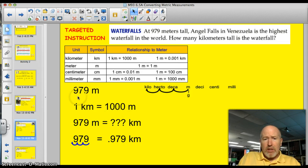Let's see. Well, it's 979 meters. Looking at my chart, I know that a kilometer is 1,000 meters. So I wrote down 1 kilometer equals 1,000 meters. And I am going to go from a meter, my base unit, to a kilometer. So I have to go three spots.